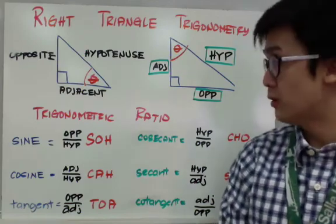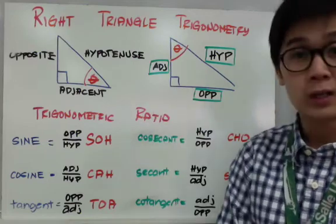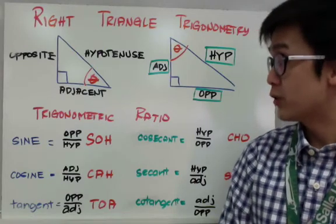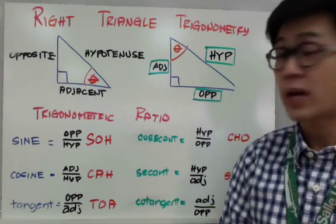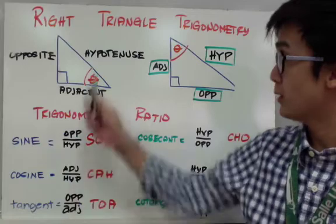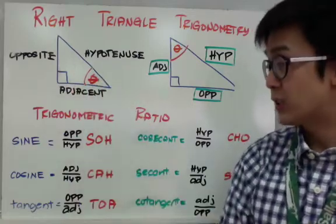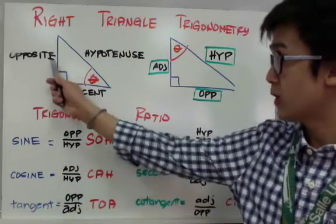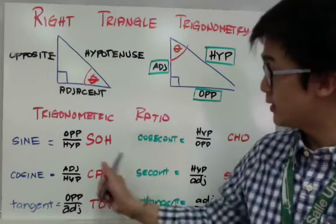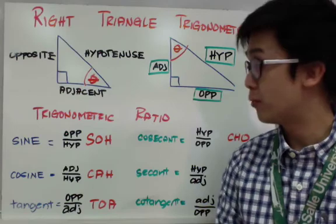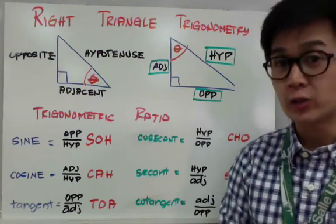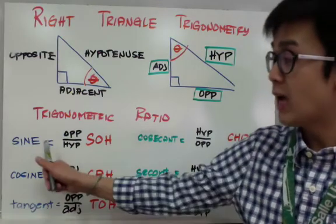Now for the six trigonometric ratios, here is the set of formulas that you need to know in trig — one of the most popular formulas in trigonometry. For sine of an angle, the formula is opposite over hypotenuse. Cosine is adjacent over hypotenuse. And tangent is opposite over adjacent. We call this SOH-CAH-TOA, and this mnemonic device is really helpful in remembering these formulas, because we will use them in solving right triangle problems.